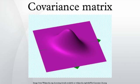In other words, the inverse of this matrix is the inverse covariance matrix, also known as the concentration matrix or precision matrix. The elements of the precision matrix have an interpretation in terms of partial correlations and partial variances.